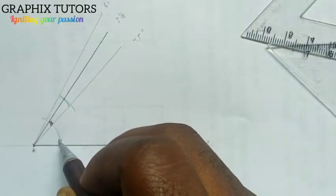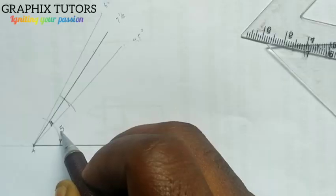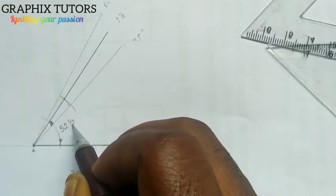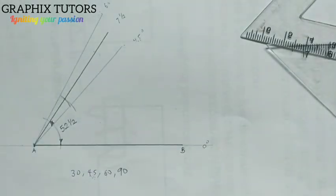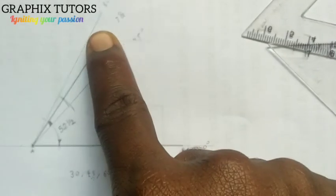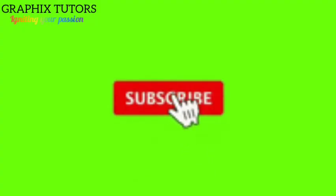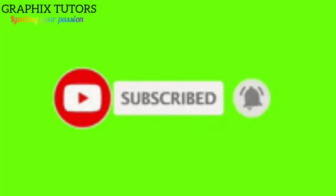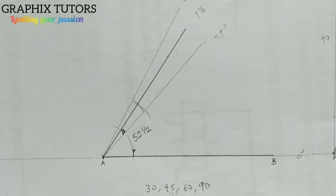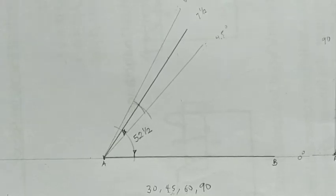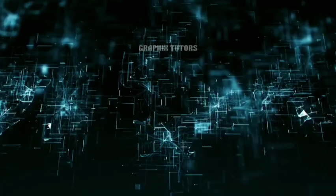Is that clear? So successfully, you can check if you want to check with your protractor. I discovered that the angle from this horizontal to this inclined line is 52 and a half. If you find this video helpful, please don't forget to click on the subscribe button. Thanks for watching.